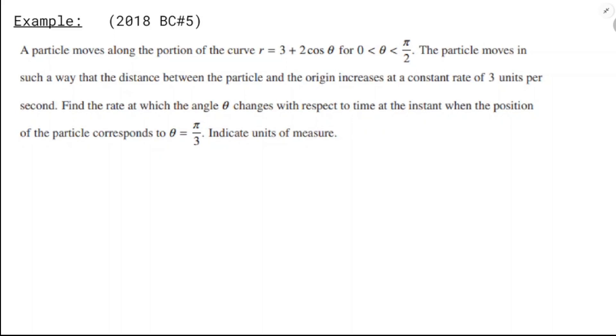So the last one I've got here is 2018 BC number 5. This wasn't even that long ago. We've got a particle moving along a portion of the curve r = 3 + 2 cos θ for 0 < θ ≤ π/2. The particle moves in such a way that the distance between the particle and the origin increases at a constant rate of 3 units per second. Find the rate at which the angle θ changes with respect to time. It's going to be a little backwards, but otherwise, not that different.